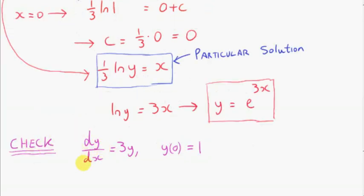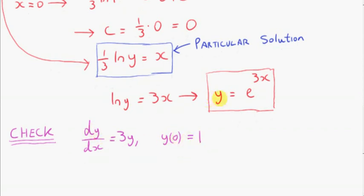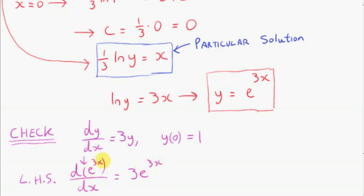Let's do a quick check. Here's our differential equation and here's the boundary condition: we want y to equal 1 when x is 0, or y at 0 must equal 1. We have to get dy/dx — we have to differentiate e to the power of 3x with respect to x. So this will be the left-hand side of the differential equation. If we differentiate e to the power of 3x, we get 3e to the 3x. If we differentiate e to the power of something, we just get it back and multiply by the derivative of the power. The derivative of 3x is 3, so we just apply the chain rule here.